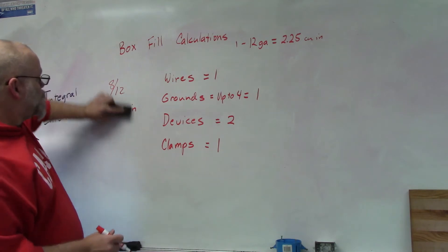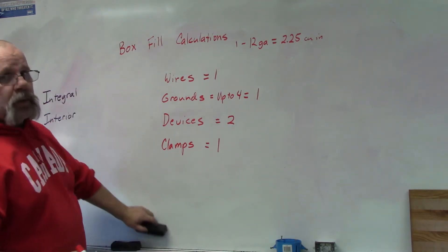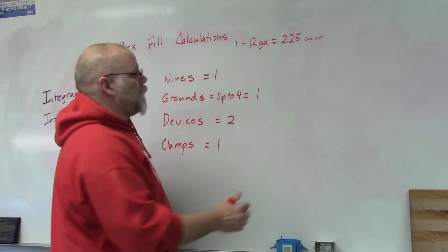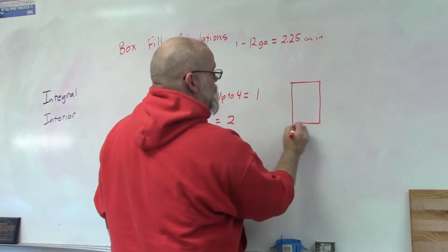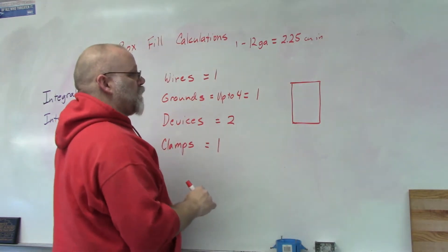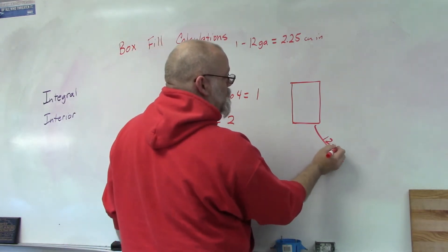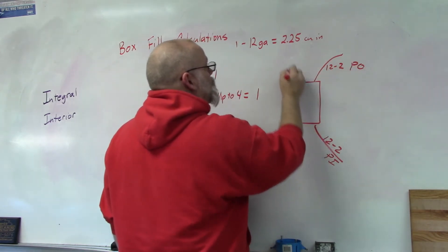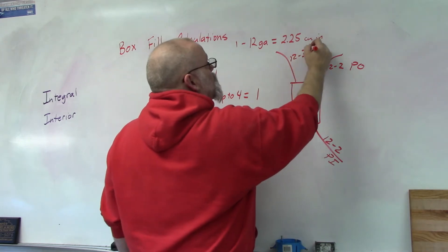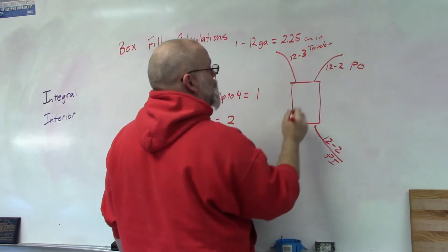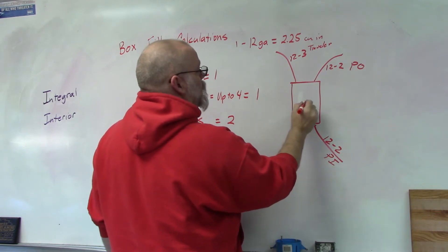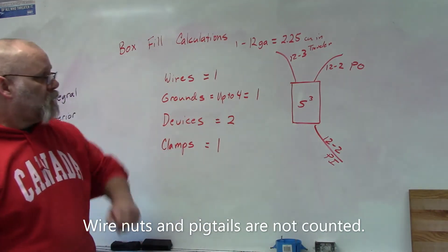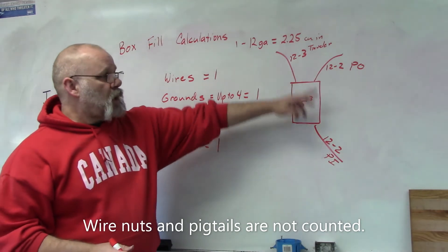So let's give an example of a box and then we can determine what size of a box you would need. Here's a standard single-gang box with a 12-2 power in, a 12-2 power out, then it has a 12-3 traveler. So we're going to put a three-way switch in here. So how big of a box do we need for these wires to fit into it?